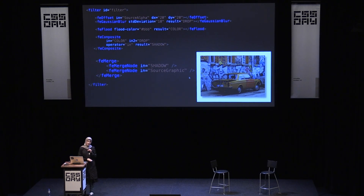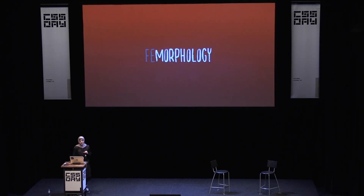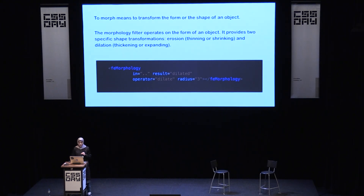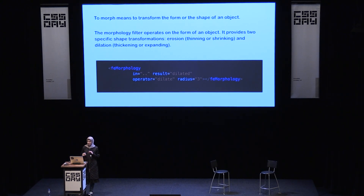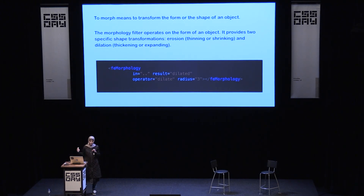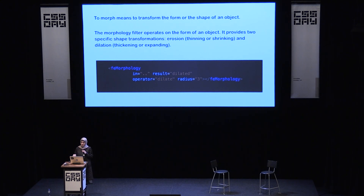Another simple primitive available is feMorphology — the morphology primitive. To morph means to transform the form or shape of an object. The morphology filter operates on the form of an object and provides two specific shape transformations: erosion, which is thinning or shrinking, and dilation, which means thickening or expanding. Using this filter primitive, you can either expand or shrink an element — text, an image, or anything.